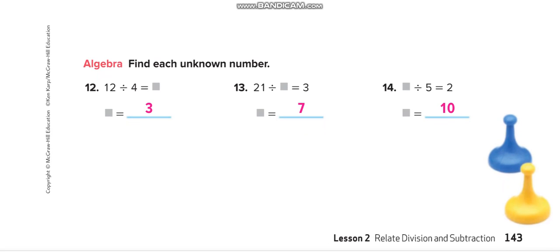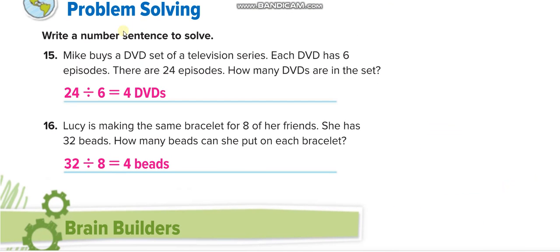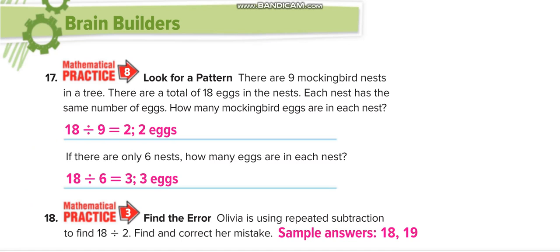Let us move to the next page. Page number 144. Mike buys a DVD set of a television series. Each DVD has 6 episodes. There are 24 episodes. So 24 divided by 6. That is 4 DVDs.